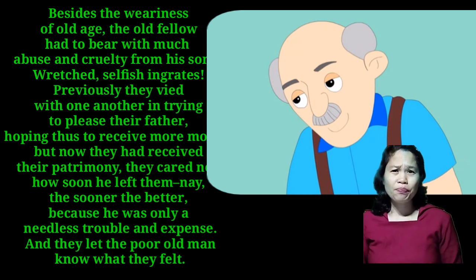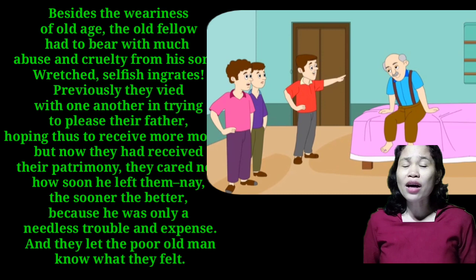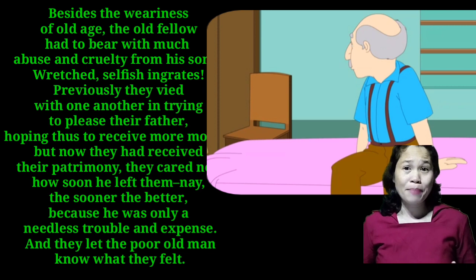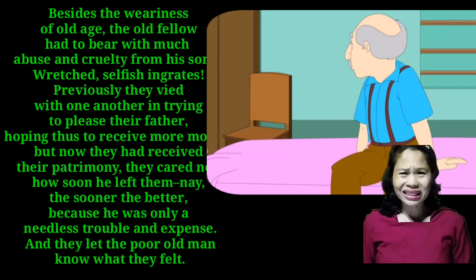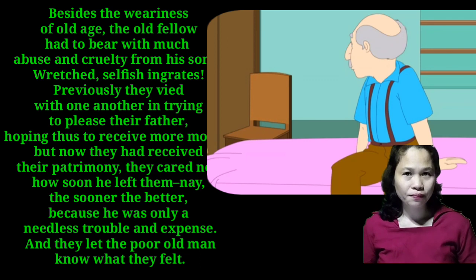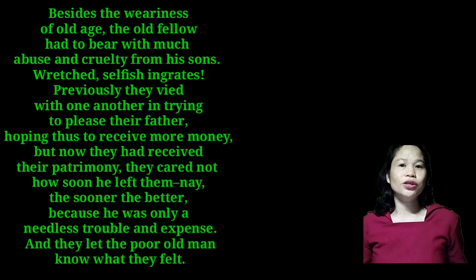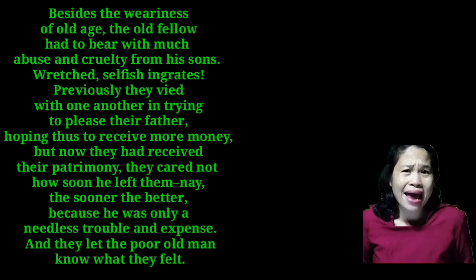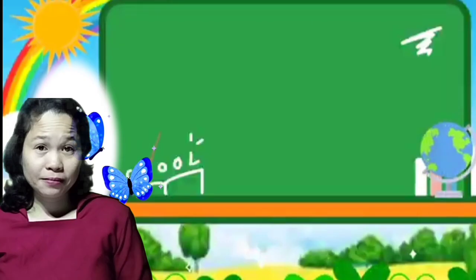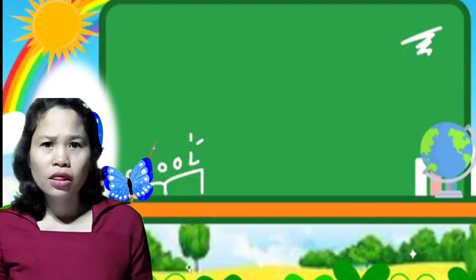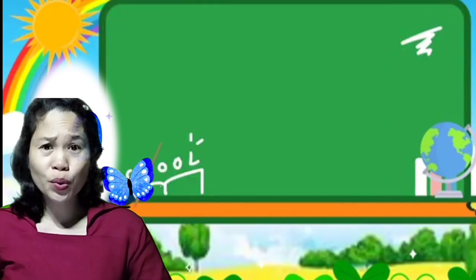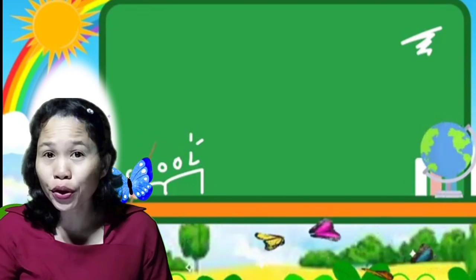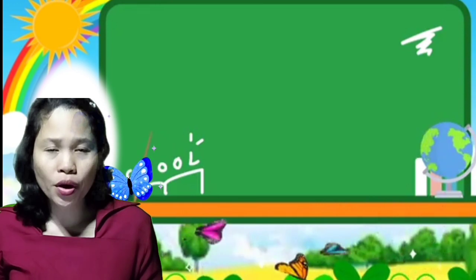Rich, selfish, and greedy — previously they vied with one another in trying to please their father, hoping to receive their patrimony. They cared not how soon he left them; the sooner the better, because he was only a needless trouble and expense, and they let the poor old man know what they felt. Why do you think the three sons were described as wicked? How did the sons treat their father? And who would help the poor old man?